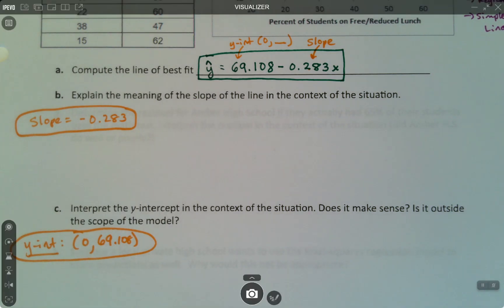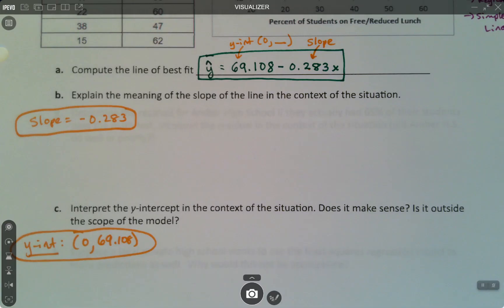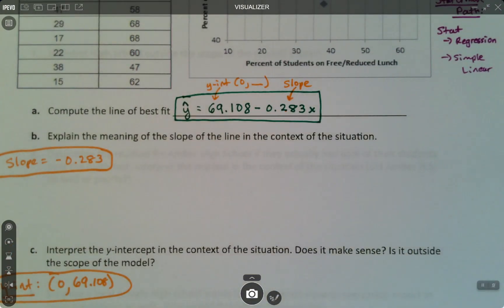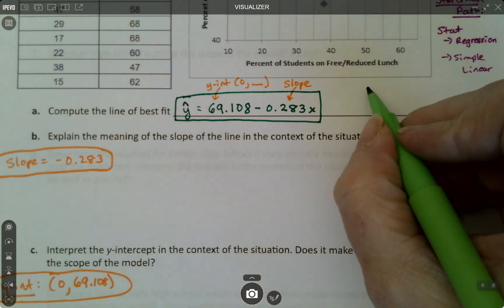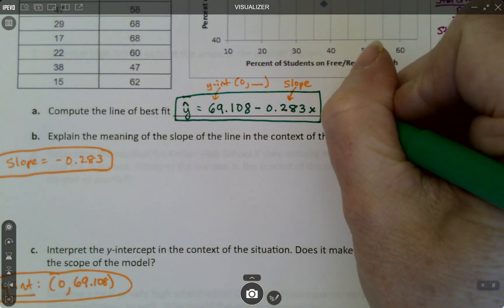A lot of algebra students are used to seeing this in reverse order. They're used to seeing the slope first and then the Y-intercept because they get it beaten into their brain by their algebra teacher that it's Y equals MX plus B. So if you want Y equals MX plus B, I'm just going to write a big or after this.